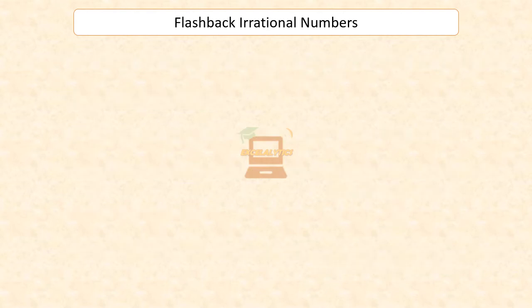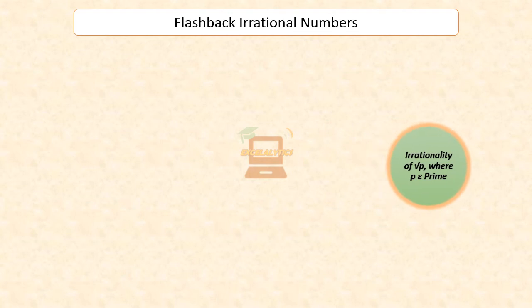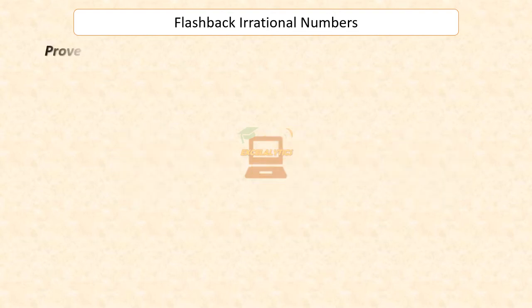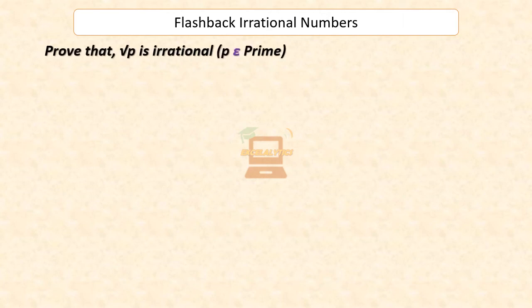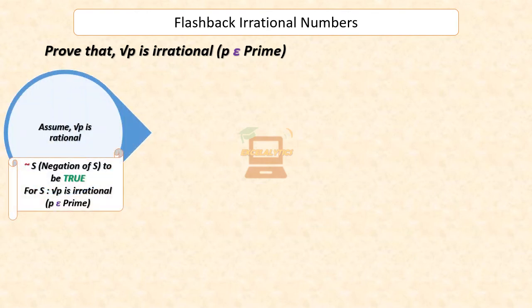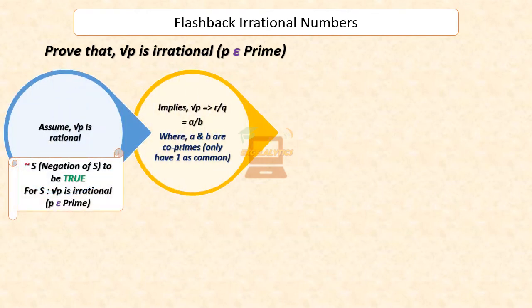We are ready to prove the irrationality of numbers, for which we will make use of the recently learned proof by contradiction method, in addition to the derived form of the fundamental theorem, to arrive at the irrationality of the numbers. Prove that the square root of a prime number P is irrational. To begin, let us assume on the contrary that square root of prime number P is rational. This implies that square root of P can be represented in the form R by Q, where R and Q are integers and Q is non-zero.